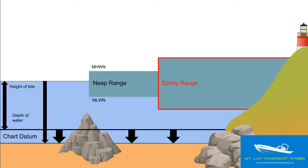The spring range is larger, and it's the difference between mean high-water springs on a spring tide and mean low-water springs on a spring tide. This gives you the spring range, a larger movement of water where you get higher highs and lower lows.